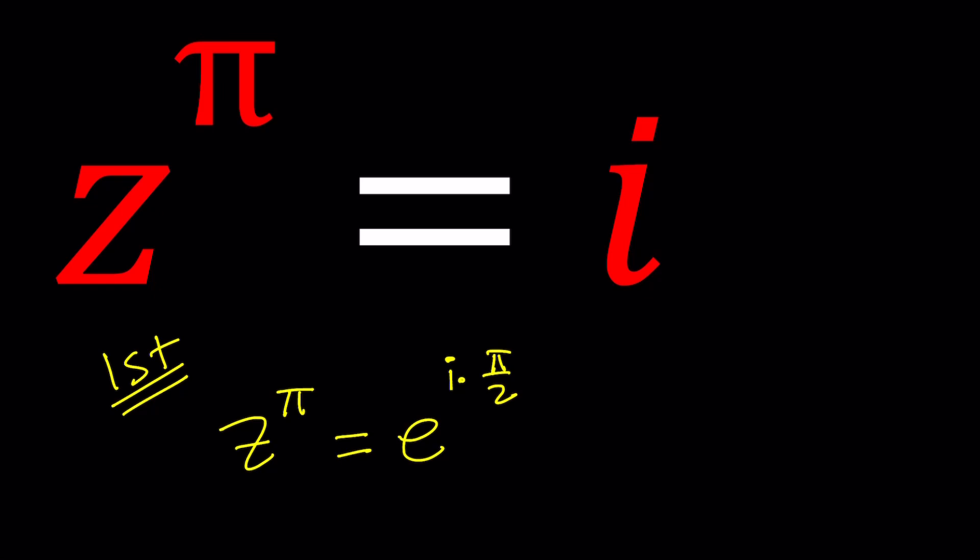If you think about it, in the Argand plane, i is represented by the number 0,1 or the point. This is real. This is imaginary. So it's pure imaginary. This is i.